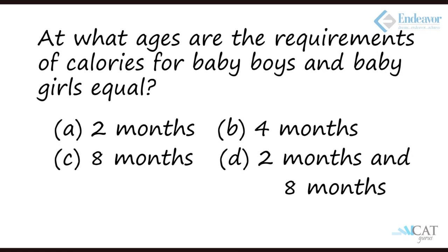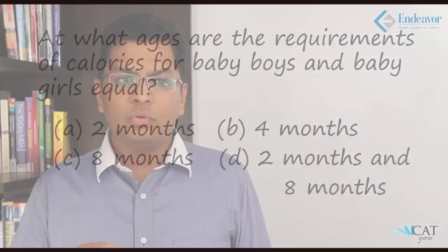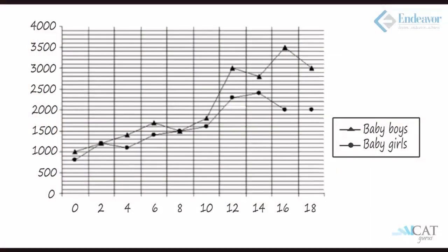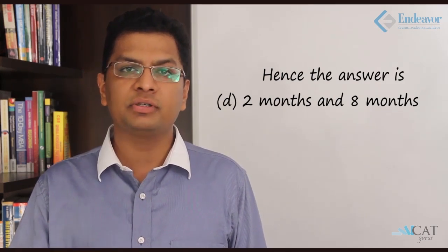Now at what ages are the calorie requirements for baby boys and baby girls equal? The points at which both lines are intersecting or overlapping are the points at which they are equal. At zero months they are not overlapping. At two months, yes they are overlapping. At four, six — no. At eight, yes again they overlap. At 10, 12, 14, 16, 18 — none overlap. So at two months and eight months their calorie requirements are the same. Hence the answer is two months and eight months.